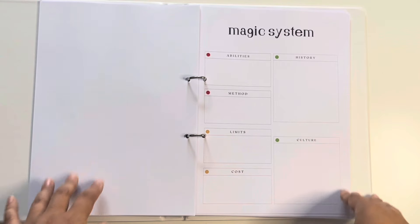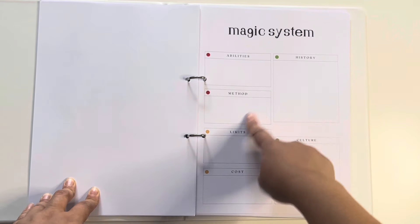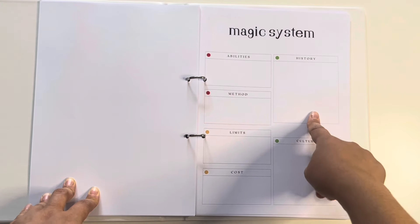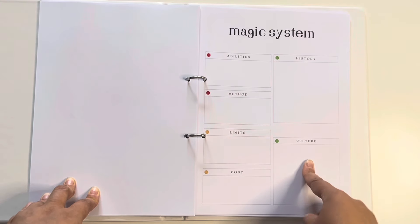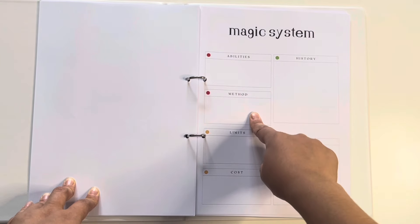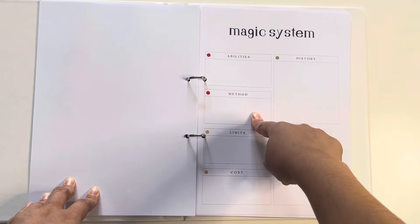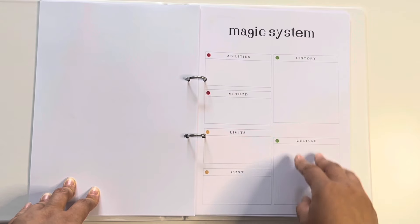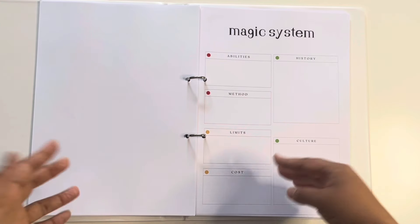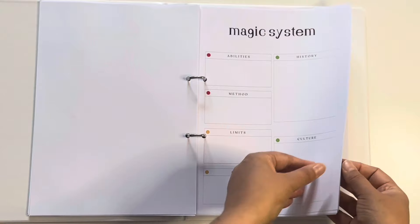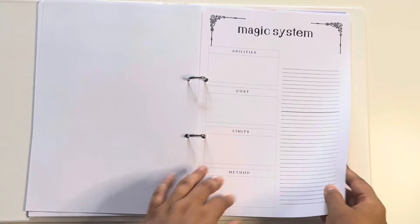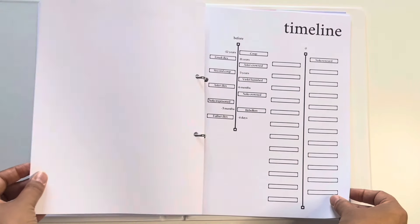And then we come to magic system, which is color coded. Red, abilities and method. Orange, limits and cost. And history and culture, green. And again, I need these two as an absolute minimum in order to start writing. And I can do these before I need to, or I could add them as I am doing the writing to keep track of what I am doing.